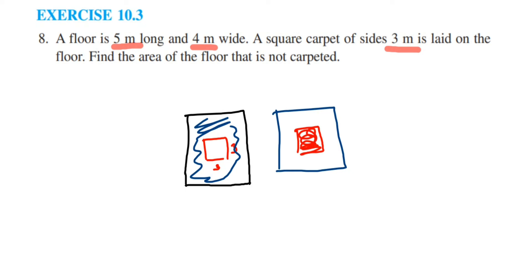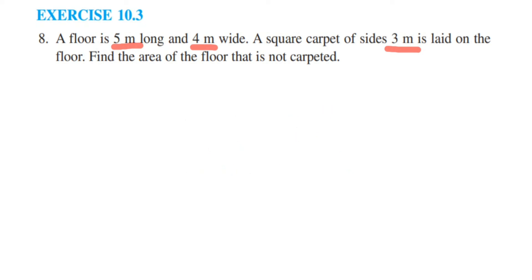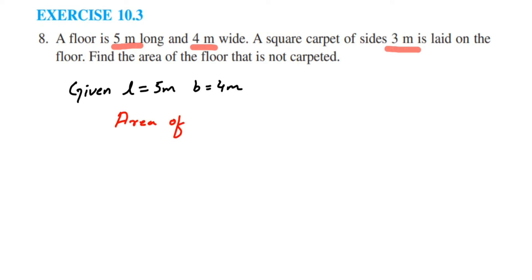So what is given: length is equal to 5 meters and breadth is equal to 4 meters. We will first find out the area of the floor. Area of floor equals length into breadth, which is 5 into 4, which equals 20 meter square.